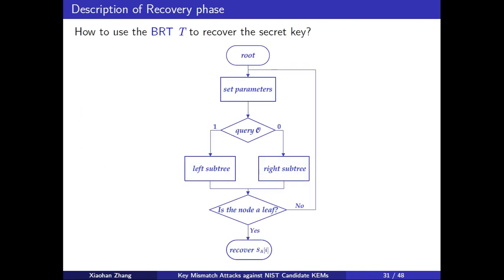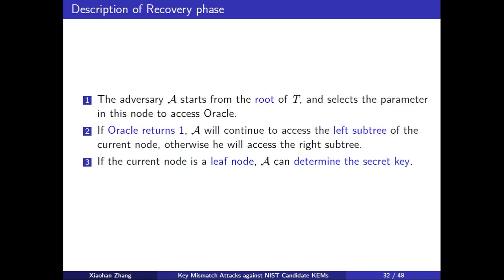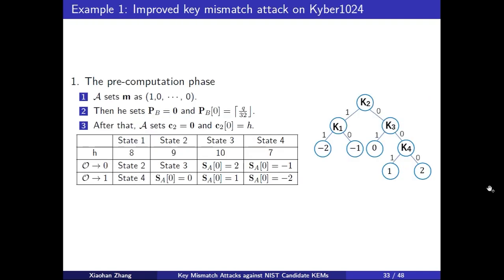On the second phase, it is recovery phase. The adversary will start from the root of the binary recovery tree T, and he selects parameters in the nodes and accesses Oracle. If Oracle returns 1, he will continue to access the left subtree of the Oracle. Otherwise, he accesses to the right subtree of the Oracle. He will repeat the process until the current node is a leaf node. Finally, he can determine the secret key. There is the detailed process of the phase.